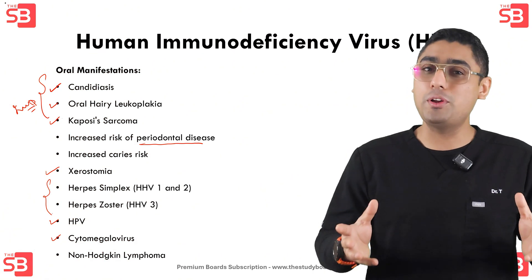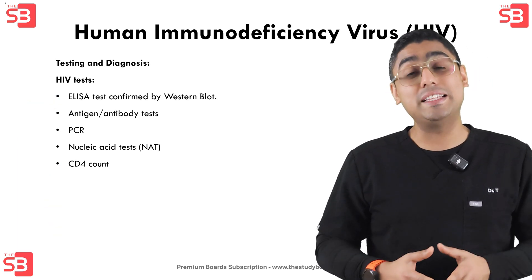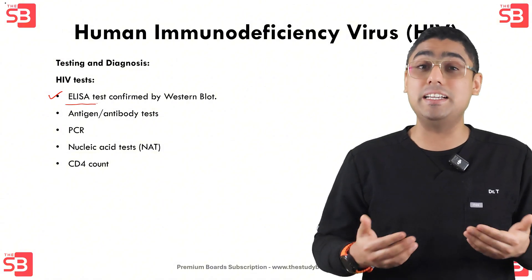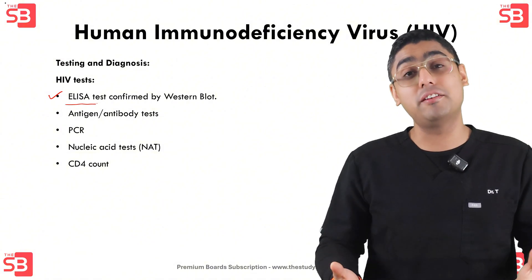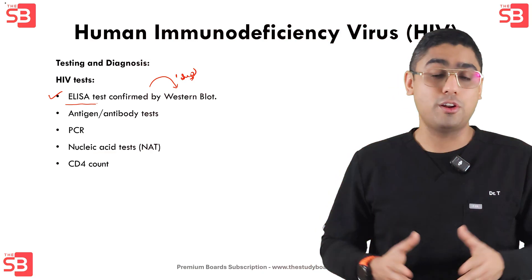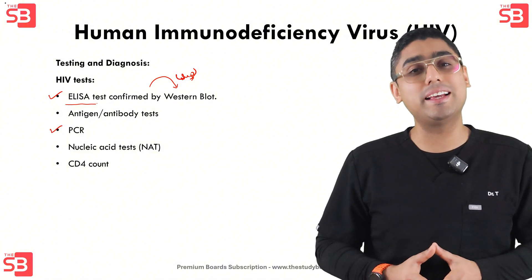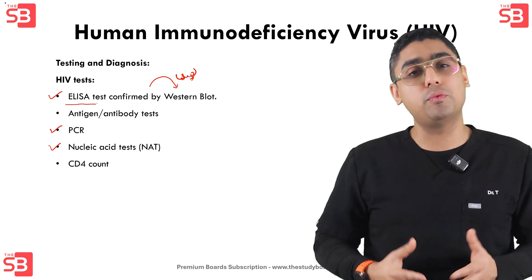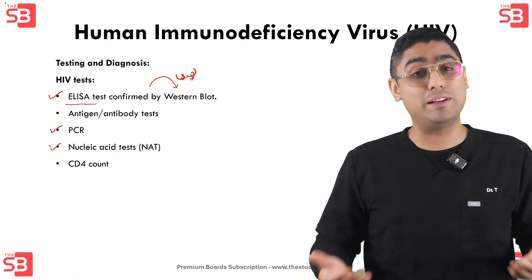Let's talk about how we can diagnose HIV. The process usually starts with the ELISA test, which screens for HIV antibodies. If this test is positive, it is further confirmed with the Western blot test to ensure accuracy. For early detection, we have the PCR test and nucleic acid tests, or NAT, and these two tests help catch the virus early, even before antibodies have fully developed.